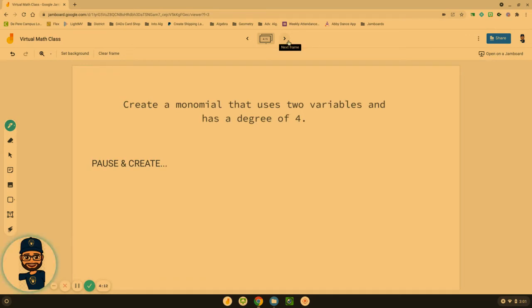I want you to pause the video and try to create a monomial. Create a monomial that uses two variables and has a degree of four - a monomial, two variables, and has a degree of four.